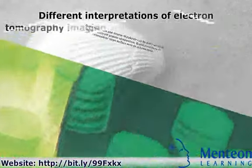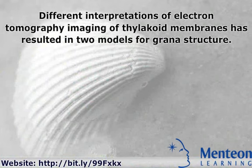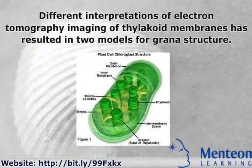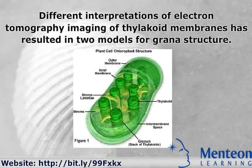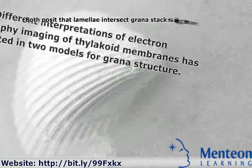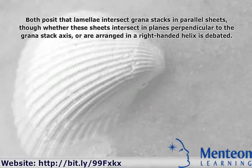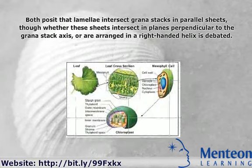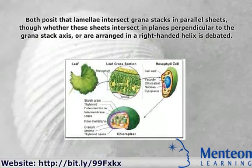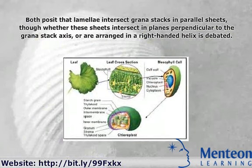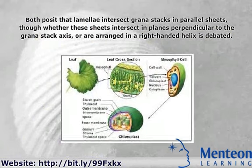Different interpretations of electron tomography imaging of thylakoid membranes has resulted in two models for grana structure. Both posit that lamellae intersect grana stacks in parallel sheets, though whether these sheets intersect in planes perpendicular to the grana stack axis, or are arranged in a right-handed helix, is debated.